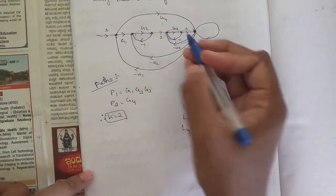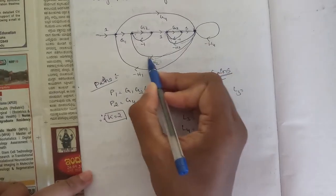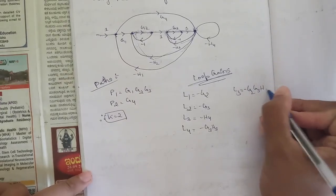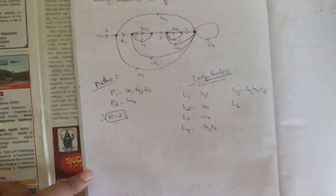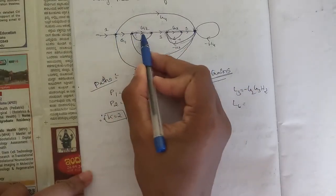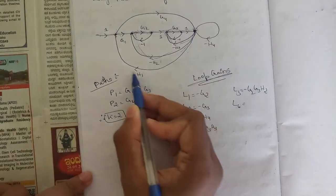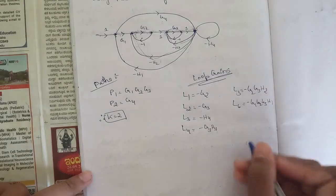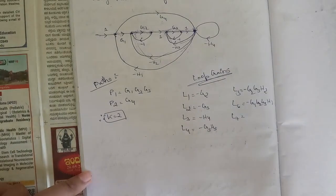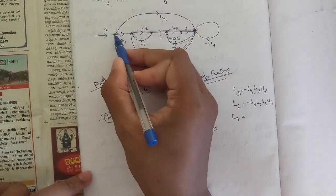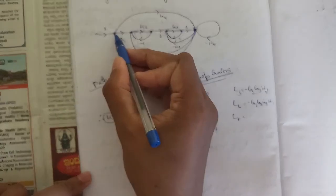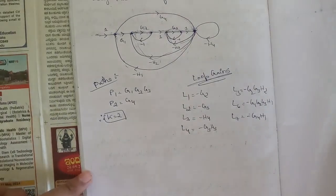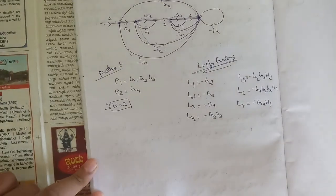L5 is minus g2·g3·h2. L6 is g1·g2·g3 into h1, so minus g1·g2·g3·h1. We also have one more loop: g4·h1, which is the outer loop, so L7 equals minus g4·h1. In total we have seven loop gains.